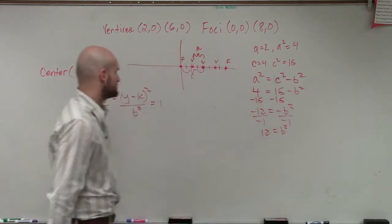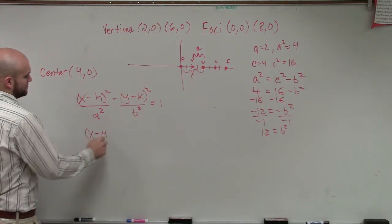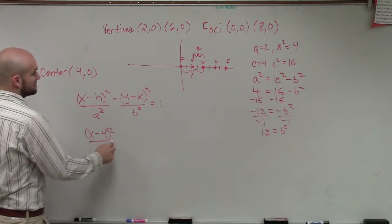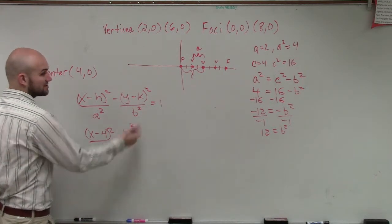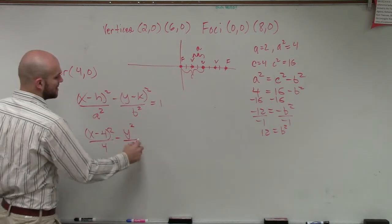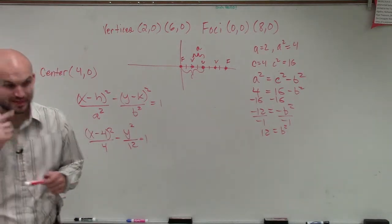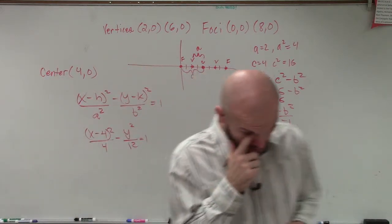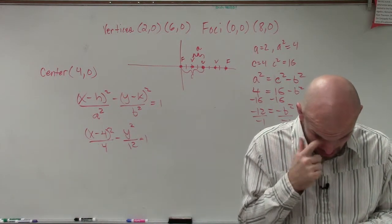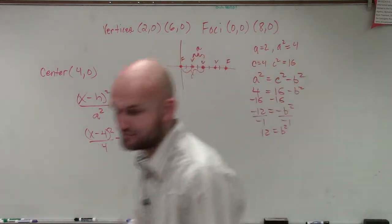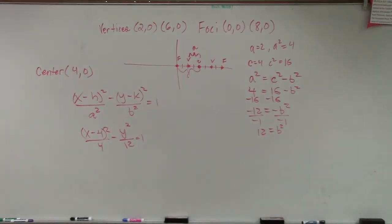So b squared equals 12, so now let's just plug in all of our points. So we have x minus 4 squared divided by a squared, which is 4, minus y squared, because it's y minus 0, divided by 12, equals 1. And that's going to be it.